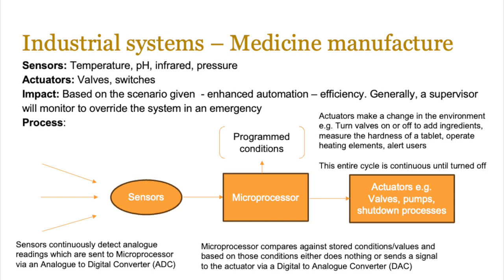This repeats for other industrial systems as well. On screen you can see medicine manufacturing. Here sensors like temperature, pH, infrared, and pressure are operating. Actuators are valves and switches. Enhanced automation and efficiency are key gains. Generally medicine is too important to leave in the hands of automated systems so a supervisor will monitor to override in an emergency. Sensors continuously detect analog readings sent to the microprocessor via an ADC; the microprocessor checks against programmed values and informs an actuator, which turns valves on and off, adds ingredients, measures tablet hardness, operates heating elements, and alerts users. Everything is continuous — you get a mark for that, as well as for the use of sensors and microprocessors against programmed conditions.